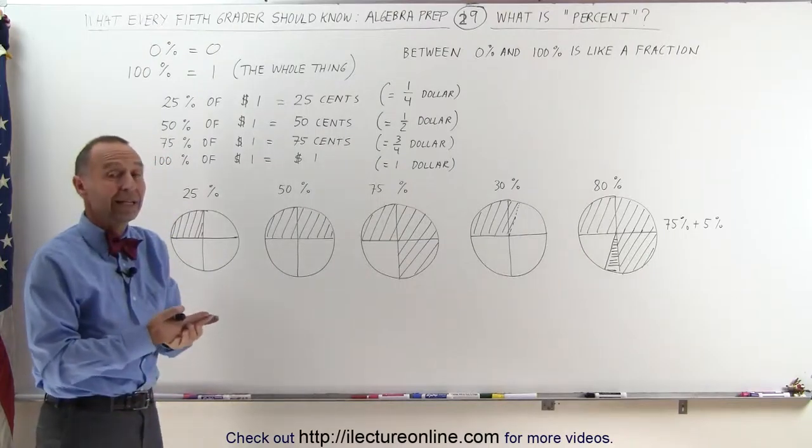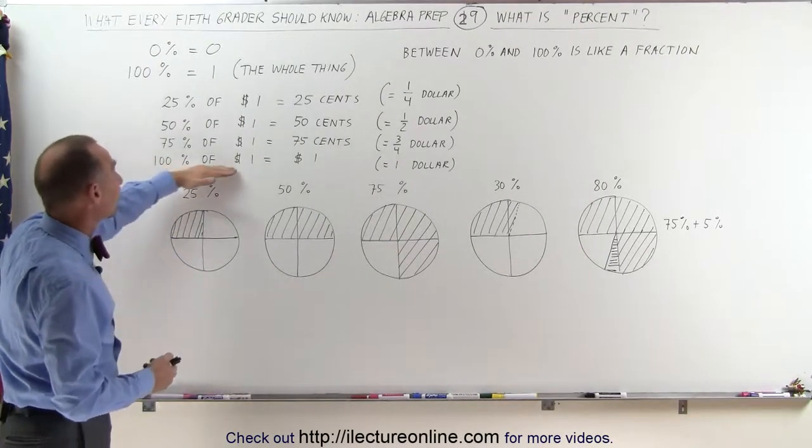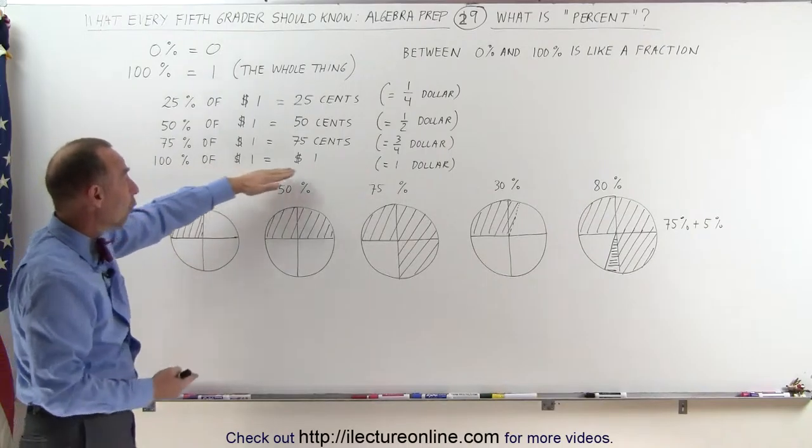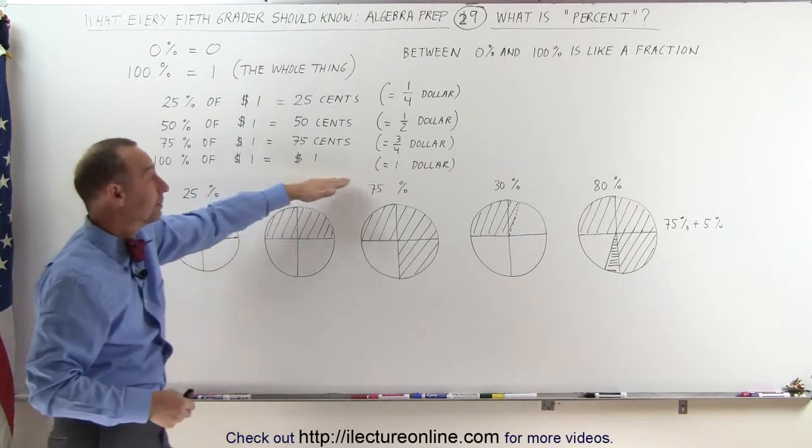So 75% of a dollar is 3 quarters of a dollar. And 100% of a dollar means we have the whole thing. We have the whole dollar, means we have a dollar. There it is.